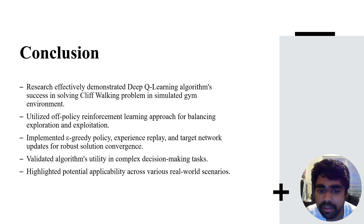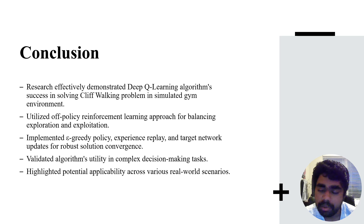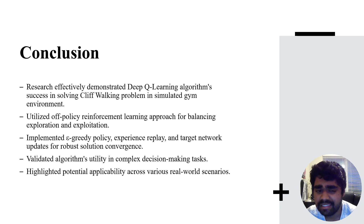In conclusion, this research effectively demonstrated that the deep Q-learning algorithm successfully solves the cliff walking problem in a simulated gym environment. An off-policy reinforcement learning approach was used, implementing epsilon-greedy policy, experience replay, and target networks to ensure a robust solution with convergence. This validates the algorithm's utility in complex decision-making tasks and highlights its potential applicability across various real-world scenarios.